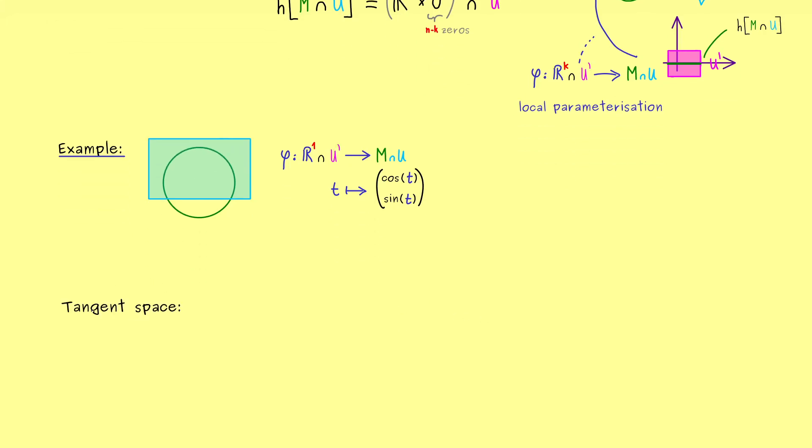For submanifolds this is a very concrete space because it should lie in our R^n. Indeed, for each point on the manifold we will define a tangent space. For example, for this point here, the tangent space will look like this - it's a linear space, a vector space tangent to the point on the manifold.